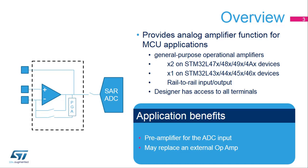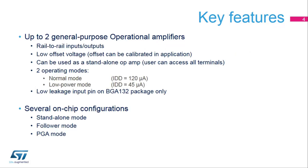They can also act as a pre-amplifier for the ADC input. The operational amplifier inside STM32L4 products offers general-purpose rail-to-rail inputs and outputs. The input offset voltage can be calibrated in the application to achieve minimal offset. All the terminals are accessible by the user so that any operational amplifier function can be configured with external passive components.